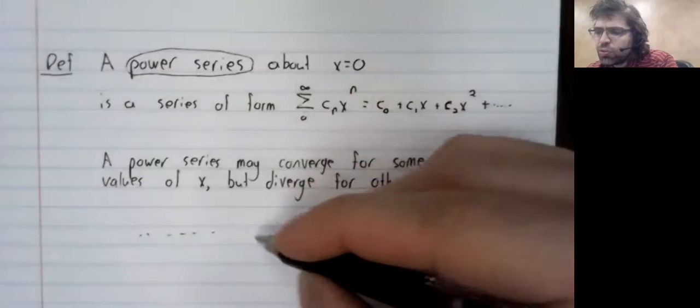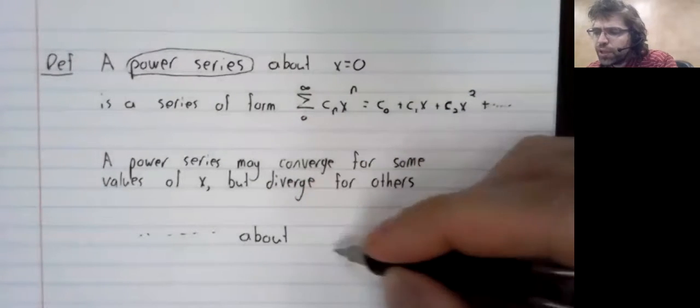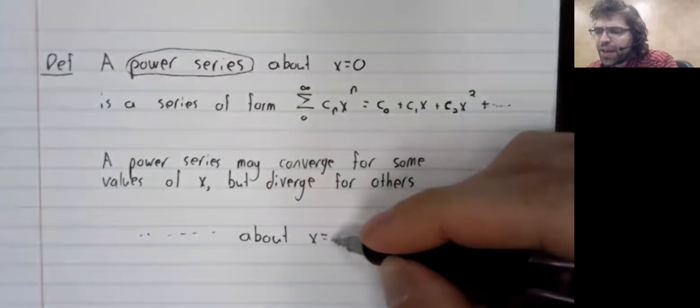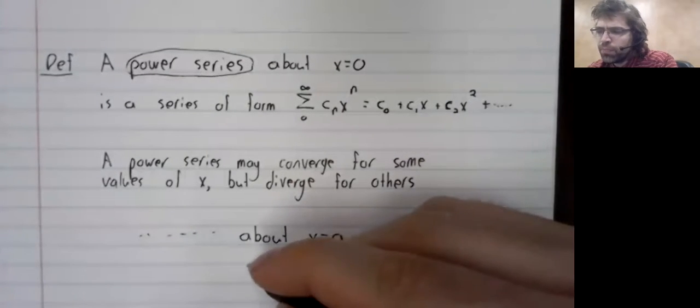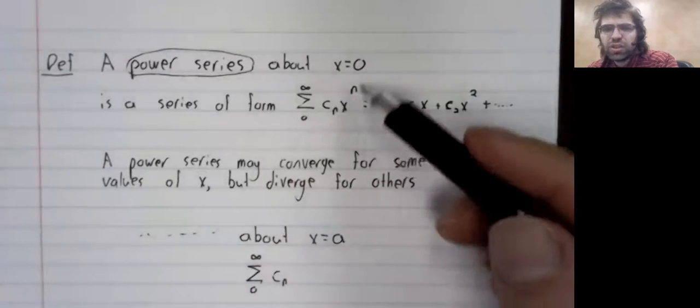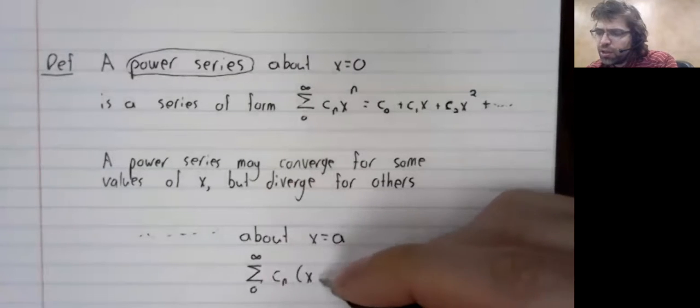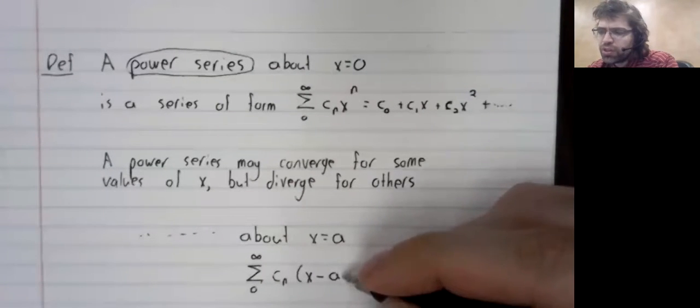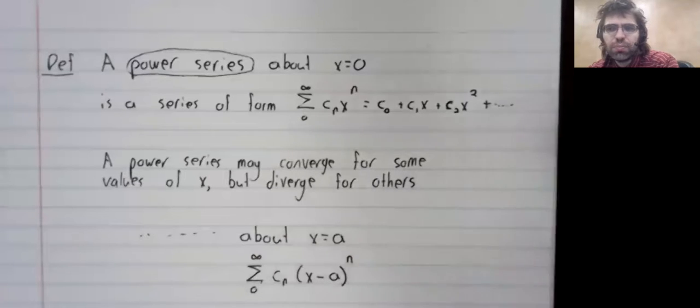let me just say that you can have a power series about any real number. And a power series about A is just this power series with a horizontal shift put in.